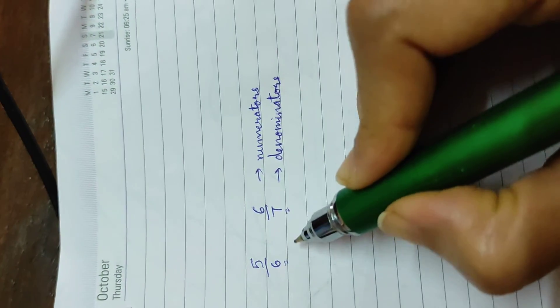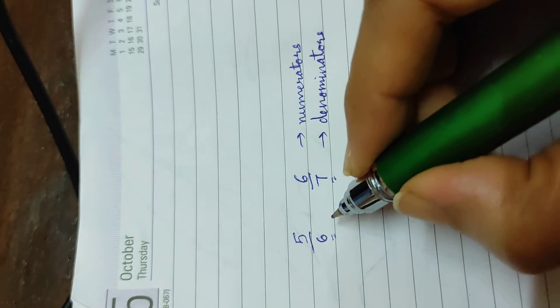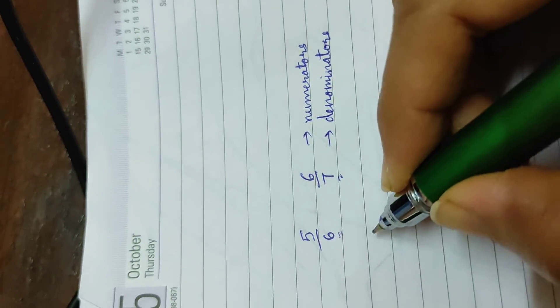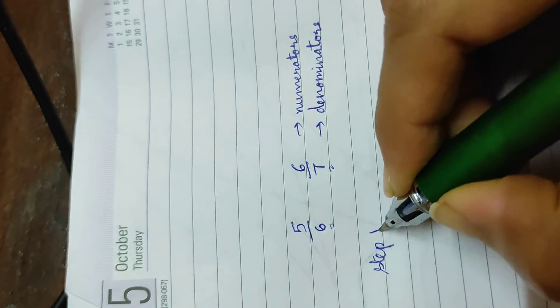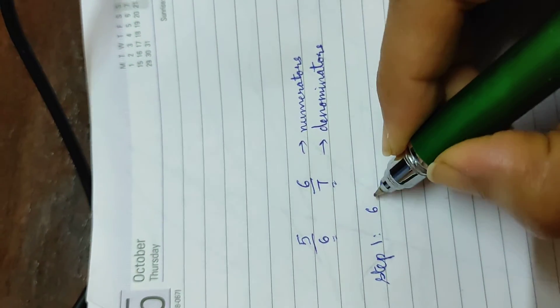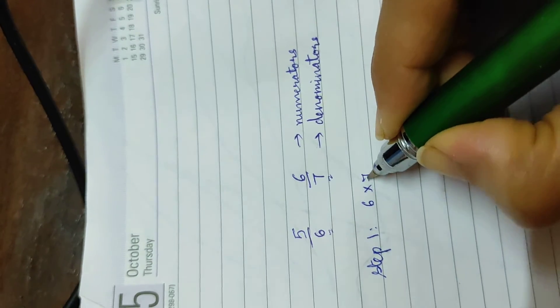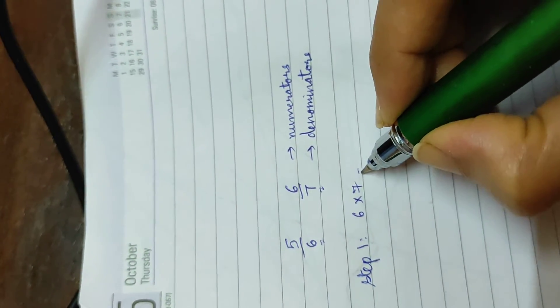So what we are going to do is we are going to multiply the two denominators. So step 1 will be we multiply 6 times 7 which will give us 42.